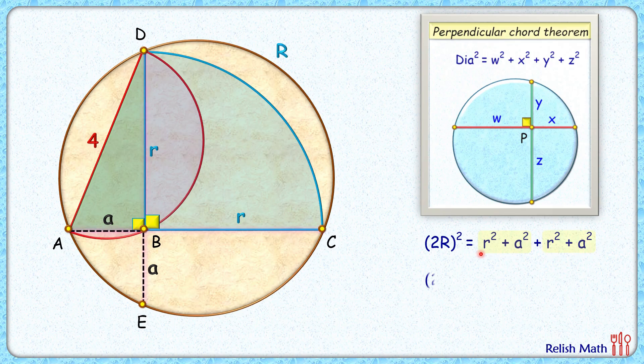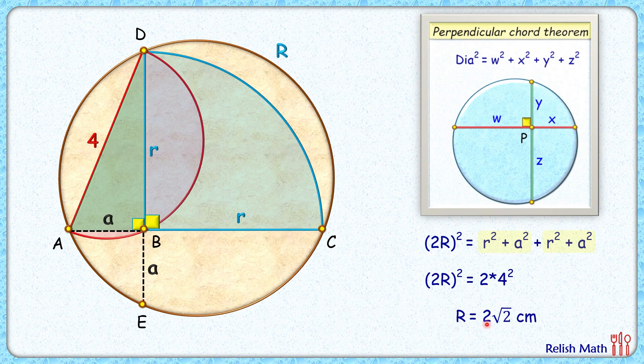Simplifying, we get the value of R squared as 8 and R as 2 root 2 centimeters. And that's our answer. I hope you enjoyed the video. I will see you in the next video. Till then, tata bye bye.